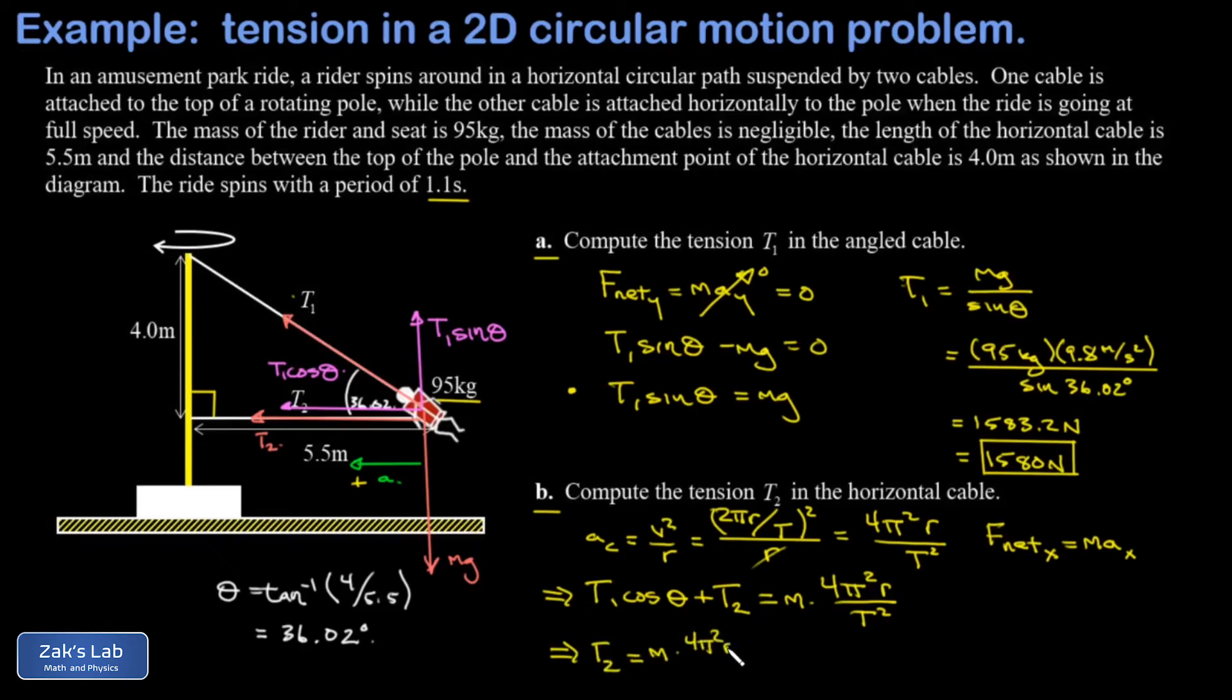I'm able to solve for T2 symbolically: m times 4π squared over T squared, where T is the period, minus T1 cosine theta. Plugging in the numbers: the radius of curvature is 5.5 meters, period of rotation is 1.1 seconds, for T1 I use 1583.2, and cosine 36.02. This gives 15,767 newtons, which I'll round to three significant digits: 15,800 newtons.